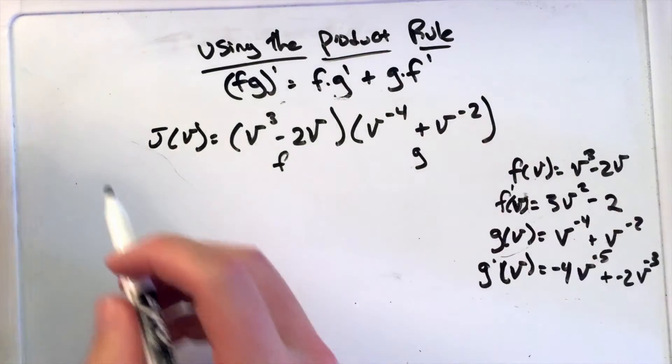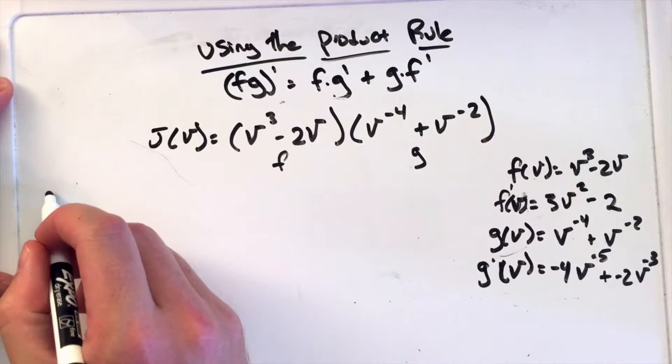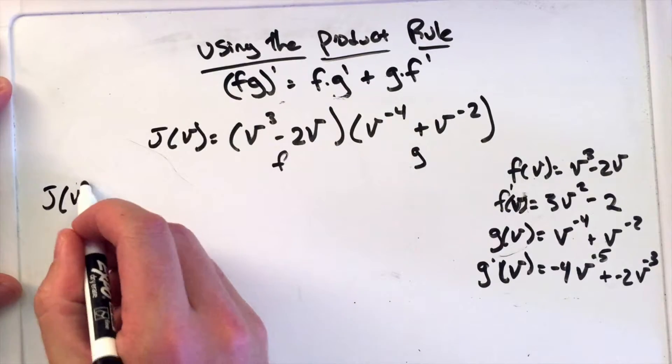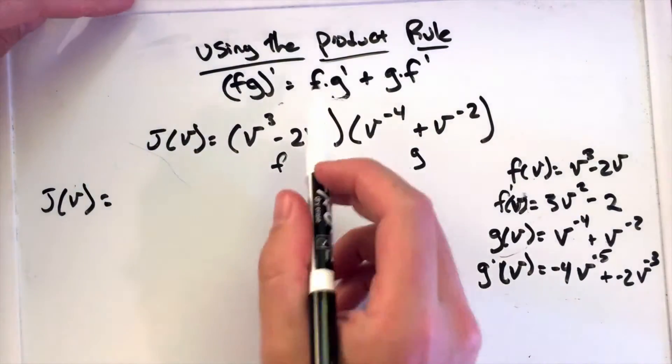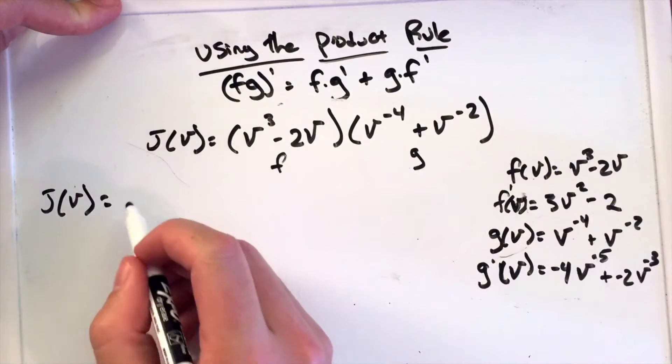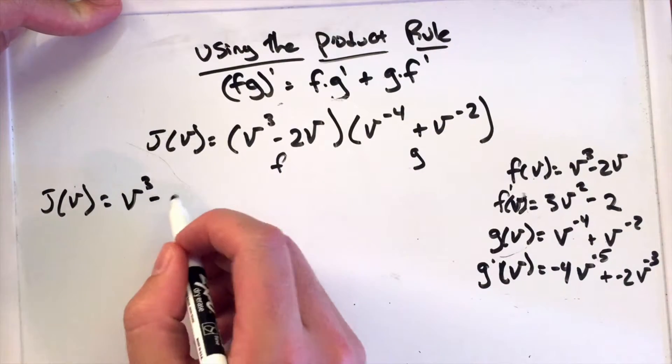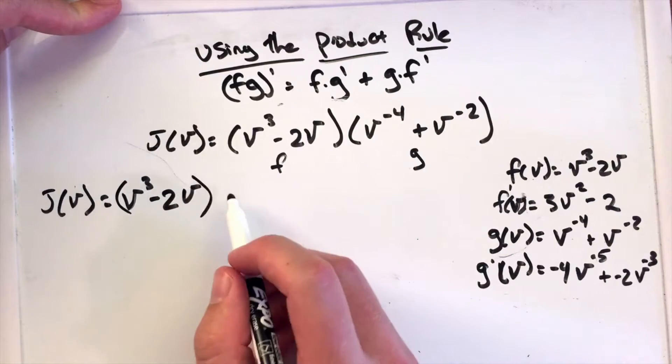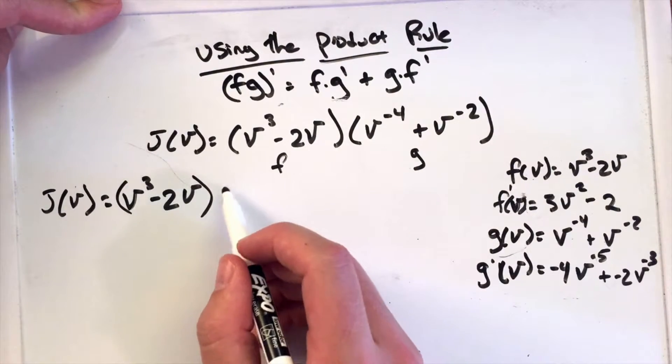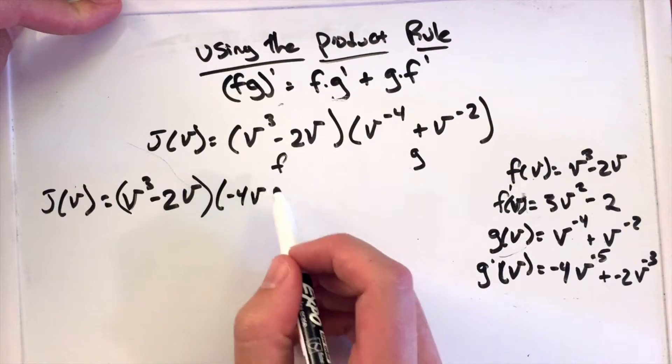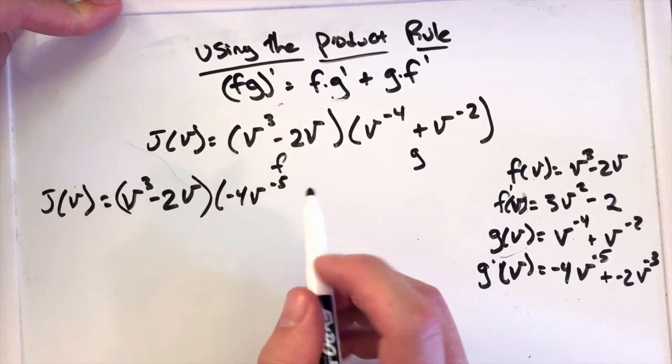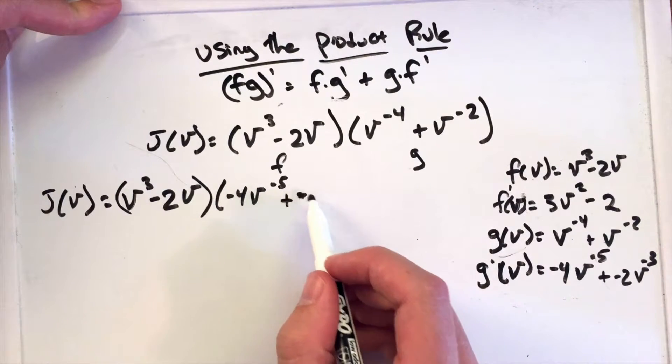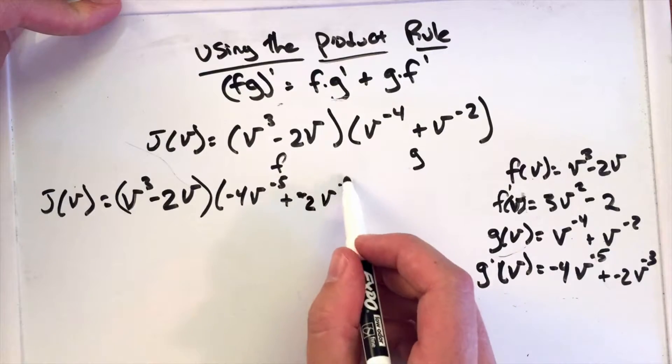So now we're just going to follow that formula, and we're ready over here. j'(v) equals f, which is (v³ - 2v), times g', which is (-4v^-5 + -2v^-3).